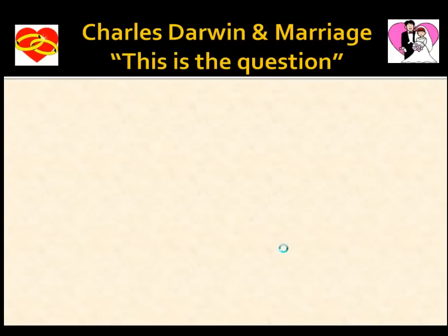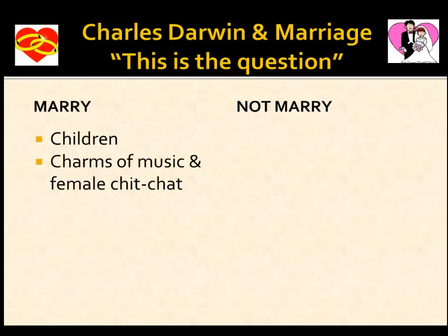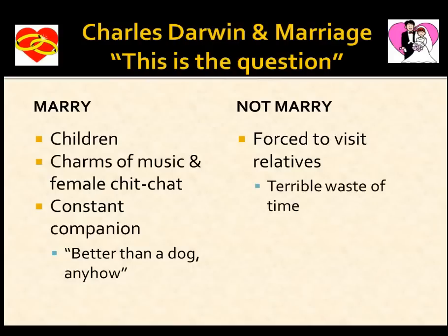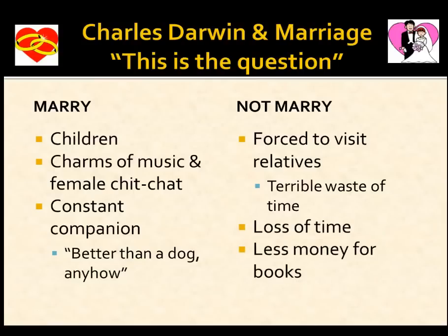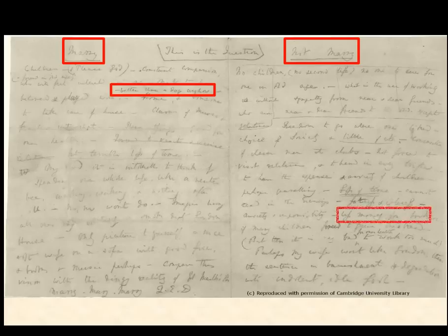Charles Darwin was a very careful person — so much so that he made a pros and cons list for getting married. His 'marry' column included children, charms of music and female chit-chat, and constant companion. He also wrote 'better than a dog, anyhow.' His 'not marry' column included forced to visit relatives, a terrible waste of time, and less money for books. This is the kind of careful, deliberate person he was — he didn't jump into anything, he waited and built up evidence before making any big decisions.